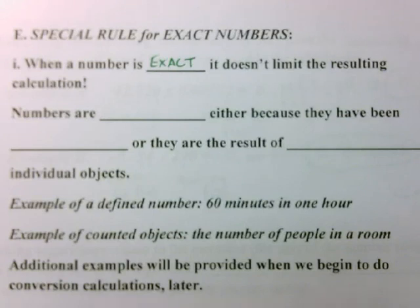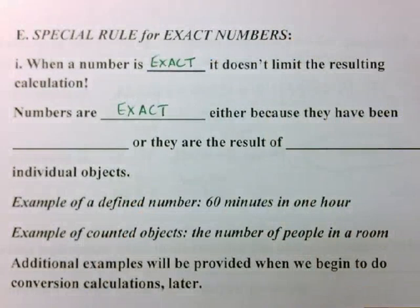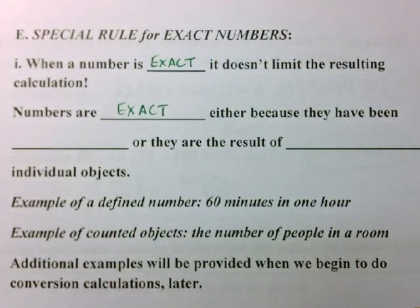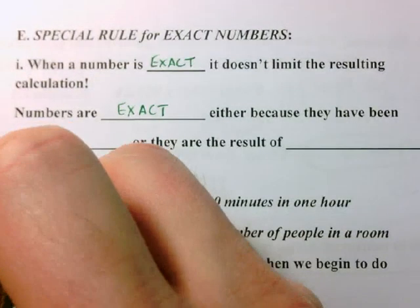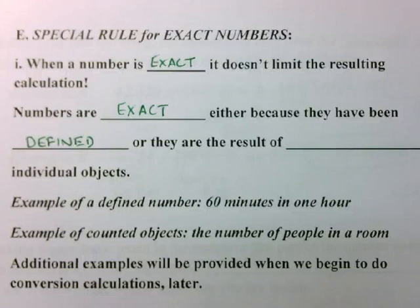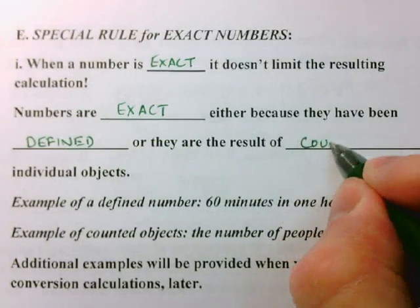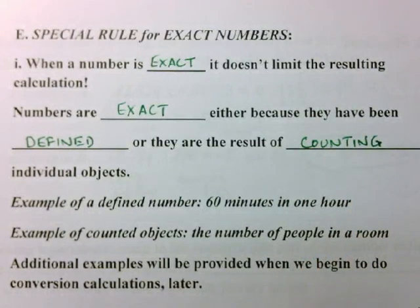Numbers are exact when one of two things has generated the number. They are exact either because they have been defined as a specific number, or they are the result of counting individual objects. These are the two ways that we can get what's called an exact number that does not limit us for sig figs.